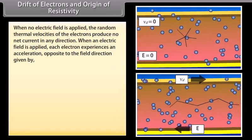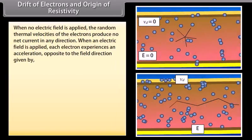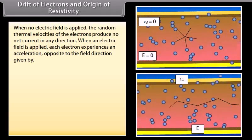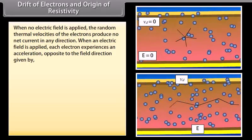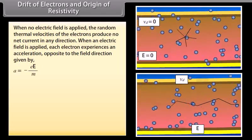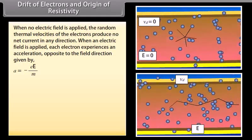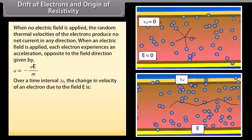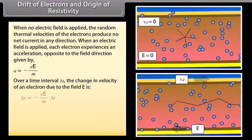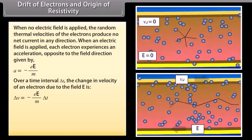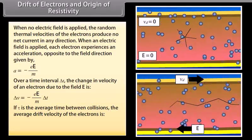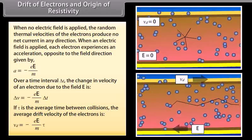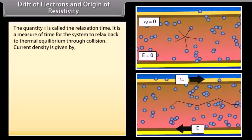When no electric field is applied, the random thermal velocities of electrons produce no net current in any direction. When an electric field is applied, each electron experiences acceleration a = −eE / m, opposite to the field direction. Over a time interval Δt, the change in velocity due to field E equals the product of acceleration and time interval. If τ is the average time between collisions, the average drift velocity equals the product of acceleration and τ. The quantity τ is called the relaxation time.